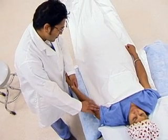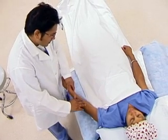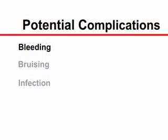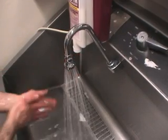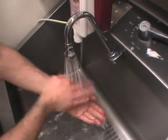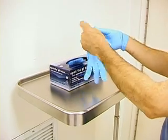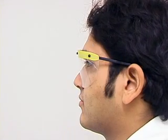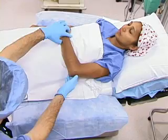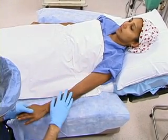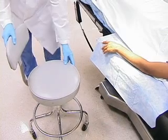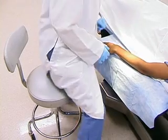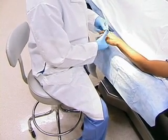Explain the procedure to the patient and address any specific questions or concerns. Discuss potential complications such as bleeding, bruising, and infection. You must follow standard precautions when placing a peripheral venous catheter, including washing hands, wearing gloves, and using eye protection because of the risk of blood splatter. When the selected site is in an upper extremity, the patient should be placed in the supine position with the arm supported. A comfortable position for the practitioner and proper lighting are important for successful intravenous cannulation.